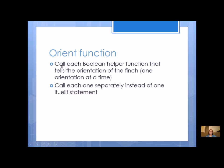For the orient function, call each boolean helper function that describes an orientation — beak up, beak down, right wing up, right wing down, etc. — one at a time using separate if statements rather than one if-elif chain. That's because the Finch can have more than one result simultaneously; maybe the beak is up and it's level. With a single if-elif you'd only get one orientation, but with separate if statements you can check each one individually.